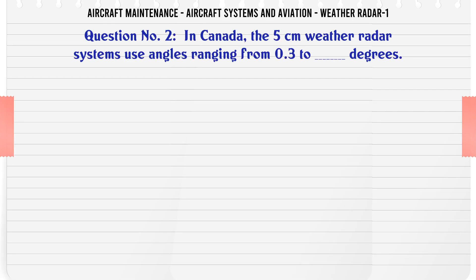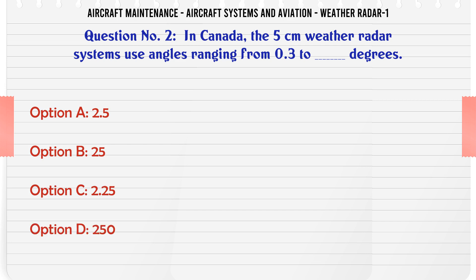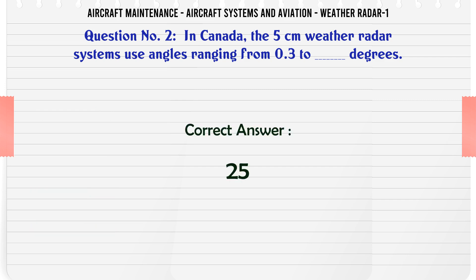In Canada, the 5 cm weather radar systems use angles ranging from 0.3 to how many degrees? A: 2.5. B: 25. C: 2.25. D: 250. The correct answer is 25.